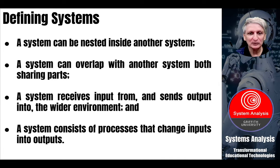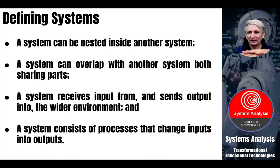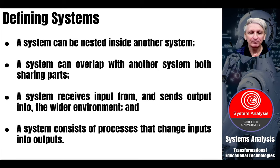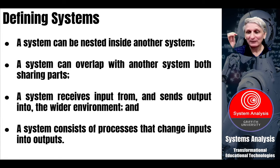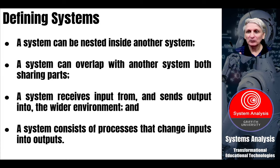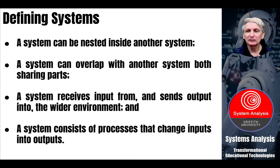The system consists of processes that change inputs into outputs. Something happens within the system from those inputs, and then there's some output from the system. If we take a simple system such as a bathtub, we have inputs of water coming into the bathtub, outputs of water going down the drain, and in between we've got things happening such as people bathing and scrubbing their arms and using soap and whatever else happens within a bathtub system.